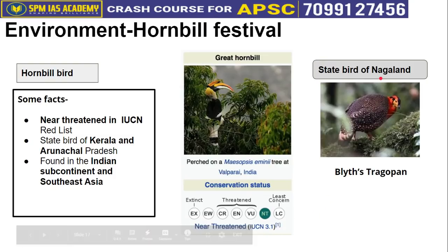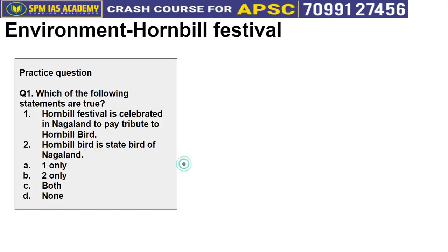One more important point to remember for the exam: the state bird of Nagaland is the Blyth's Tragopan, not the Hornbill. This is a common mistake students make — since Hornbill Festival is held in Nagaland, many assume Hornbill must be Nagaland's state bird. But that is not the case. The festival honors the Hornbill bird, but the state bird is Blyth's Tragopan. A practice question has been given: which of the following statements are true? — 'Hornbill Festival is celebrated in Nagaland to pay tribute to Hornbill bird' is correct; 'Hornbill bird is state bird of Nagaland' is wrong. You can submit the answer in the comment section.